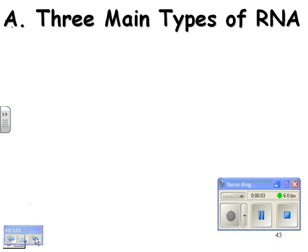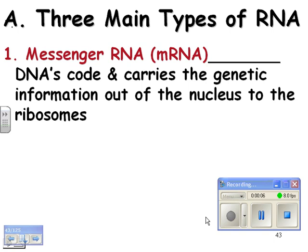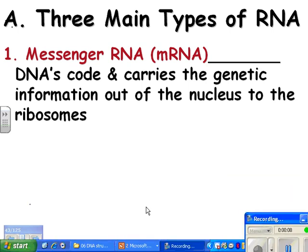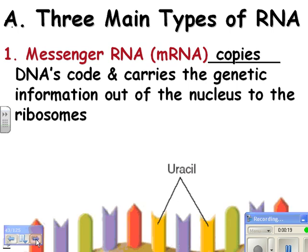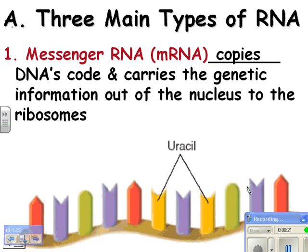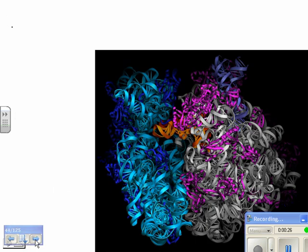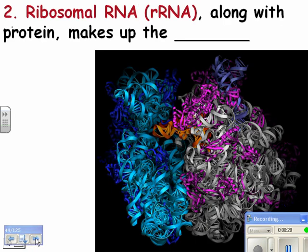There are three main types of RNA. The first one, and the most important for our class, is messenger RNA, abbreviated mRNA. This is the one that copies DNA's code and carries the genetic information out of the nucleus to the ribosomes. The mRNA is single-stranded and has uracil instead of thymine.